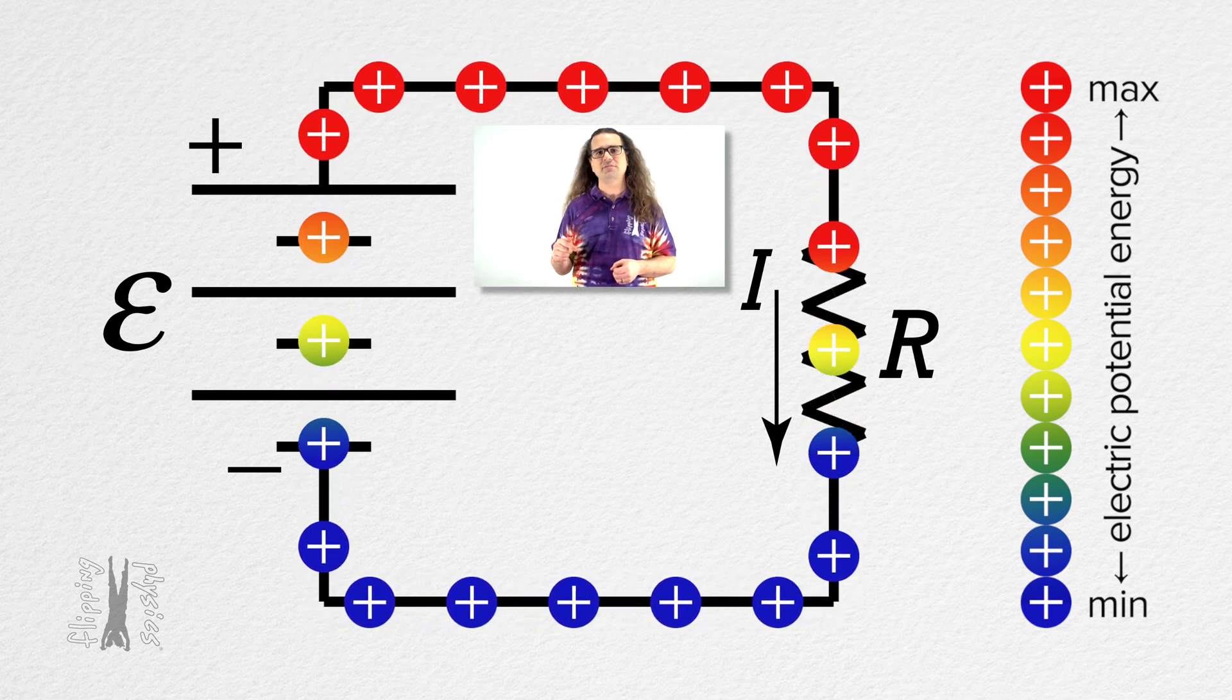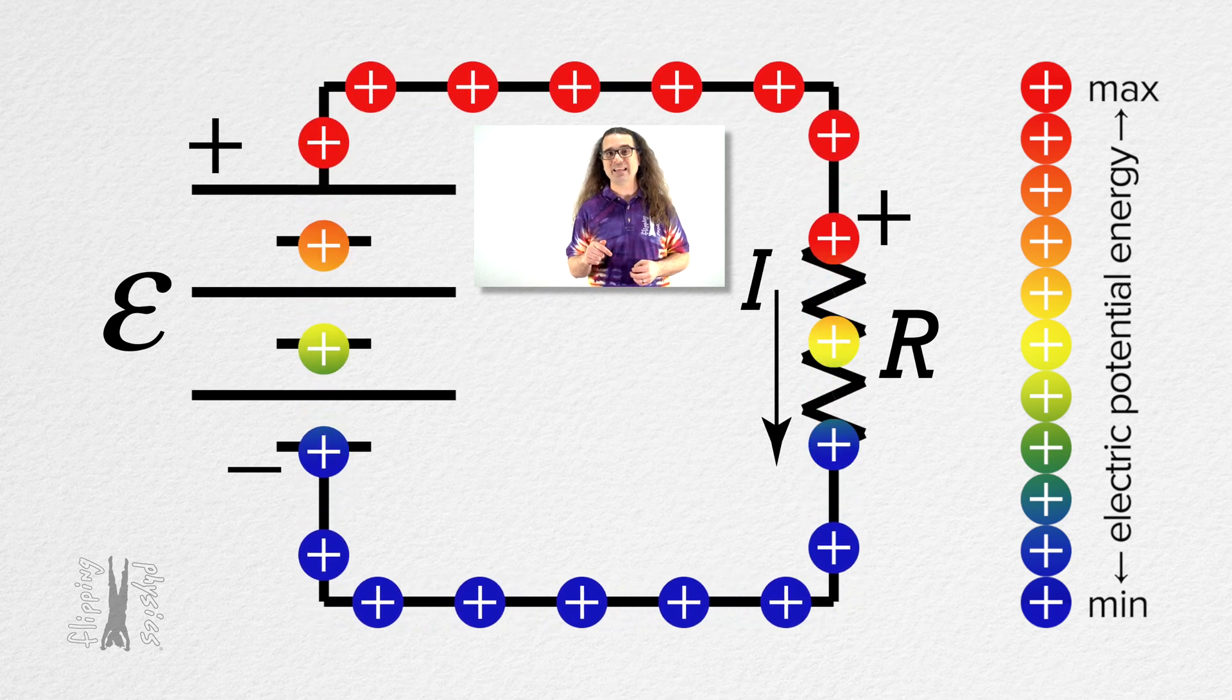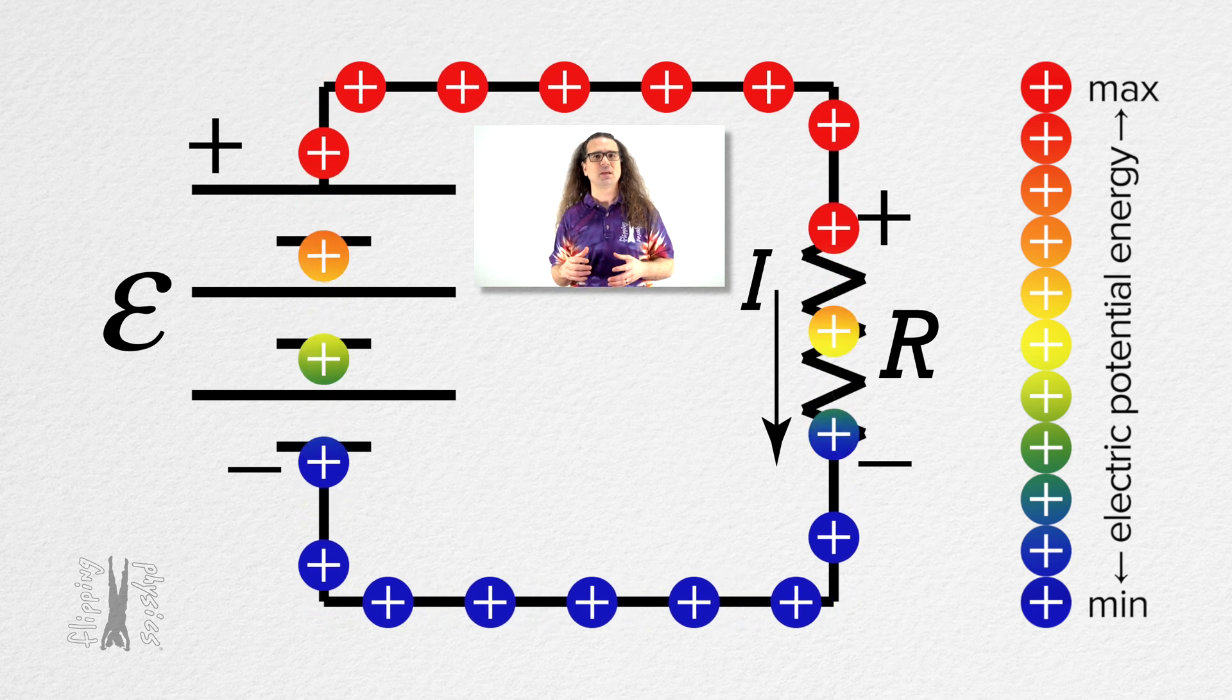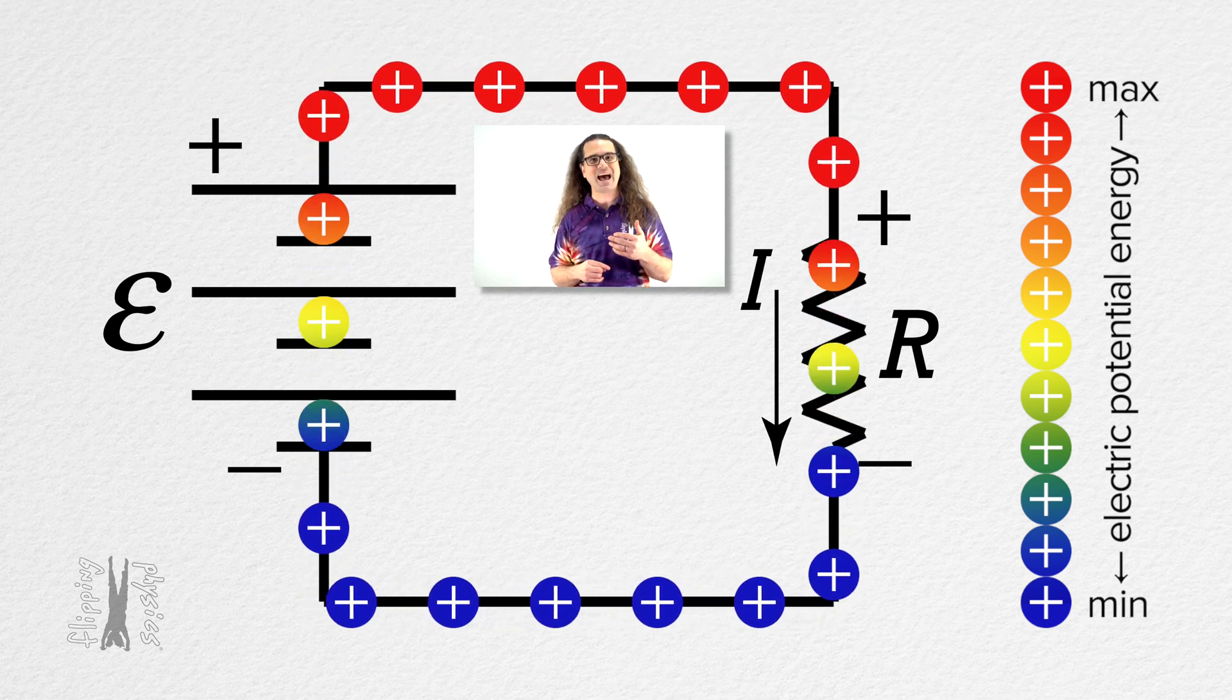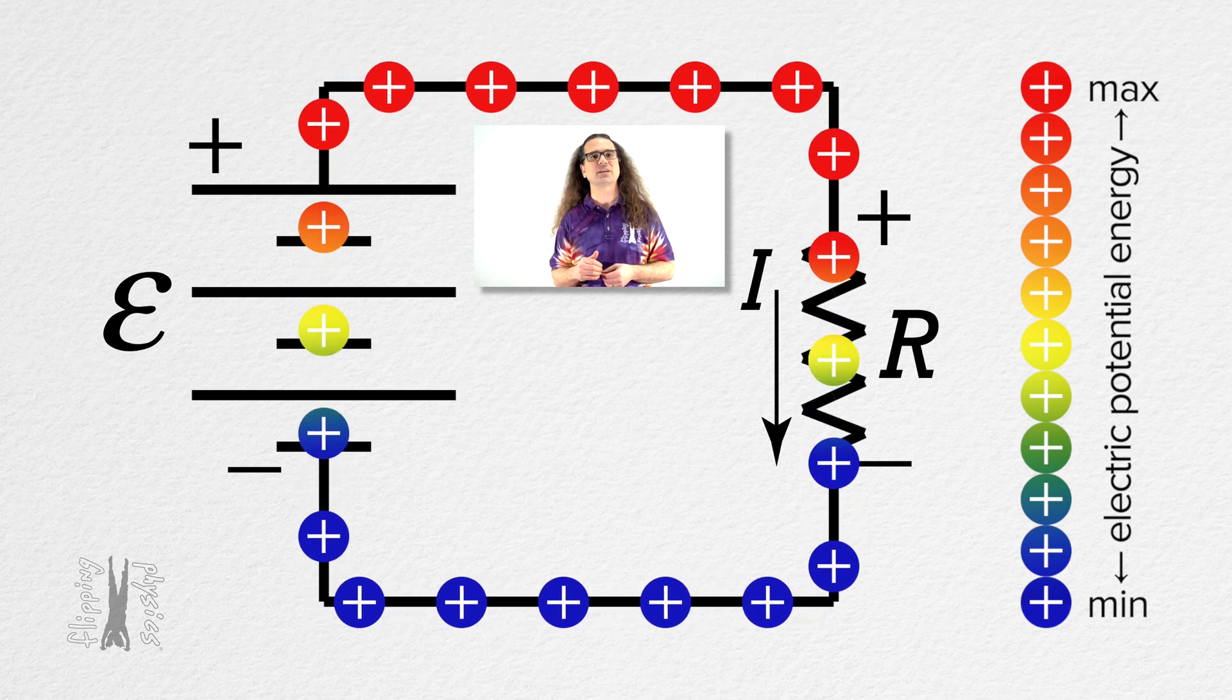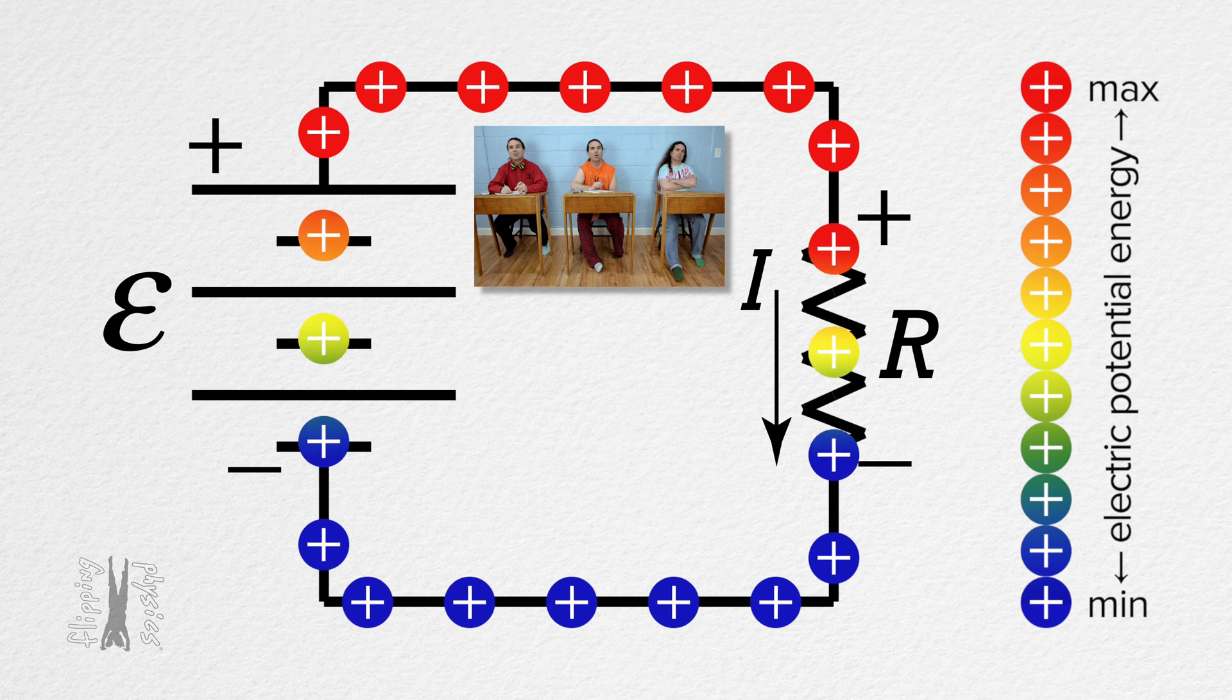Notice this means the positive side of the resistor is at the top of the resistor in our diagram and the negative side of the resistor is at the bottom of the resistor in our diagram. This is because the charge has its highest electric potential energy at the top, therefore the electric potential of the resistor is highest at the top. And the charge has its lowest electric potential energy at the bottom, and therefore the electric potential of the resistor is lowest at the bottom.